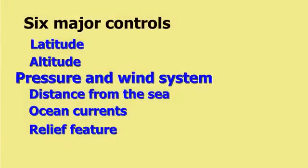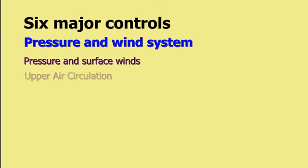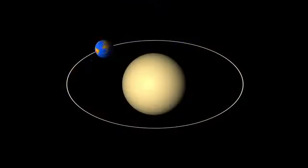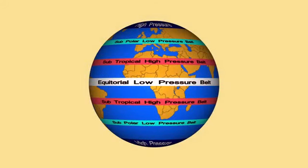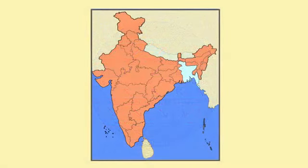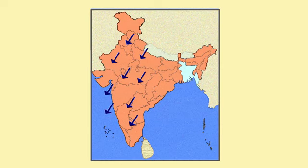Next is pressure and wind systems. We study this under three categories: pressure and surface winds, upper air circulation, and western cyclonic disturbances and tropical cyclones. Based on the rotation and revolution of the earth and the apparent movement of the sun, different pressure belts have developed, and surface winds move from high pressure to low pressure areas. Important winds on the earth are easterlies, westerlies, polar winds, and monsoon winds. Two types of winds blow over India: southwest monsoon winds, which blow from sea to land (onshore winds), and northeast winds, which blow from land to sea (offshore winds).